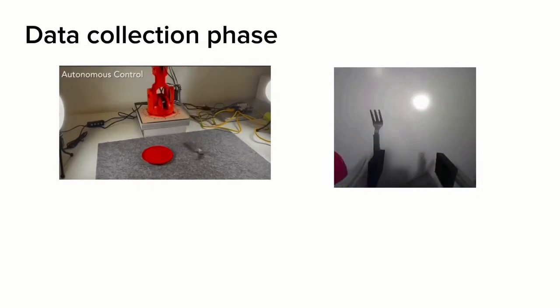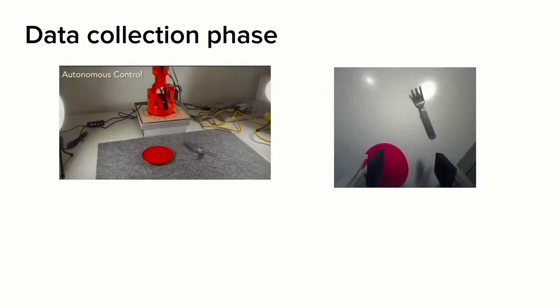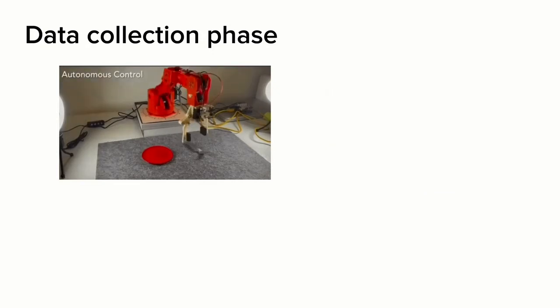Using a wrist-mounted camera, only the relative pose between the end effector and objects influences the observation image. Therefore, moving the end effector has the same effect as moving the object to different positions and orientations, but the former can be done autonomously.